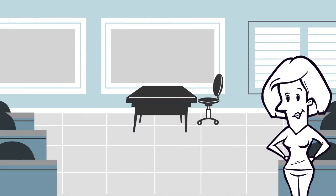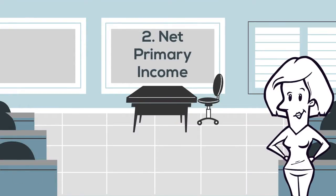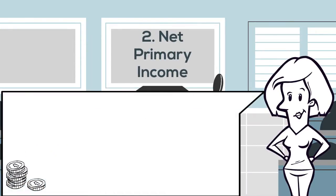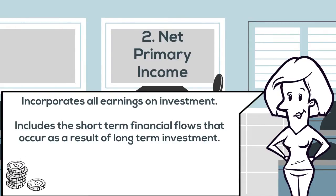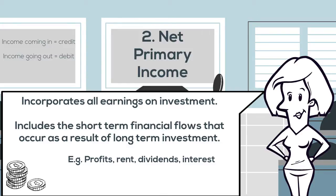The net primary income account includes all the income that has been earned from investment choices. More simply, it includes all the short-term financial flows that occur as a result of long-term investment. For example, investing in businesses in the long term can lead to short-term income flows of profits and/or dividends.